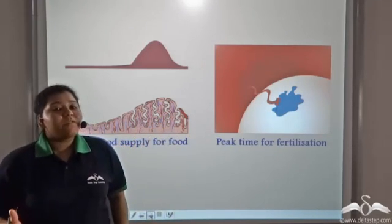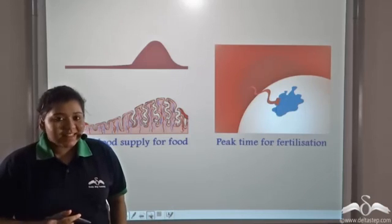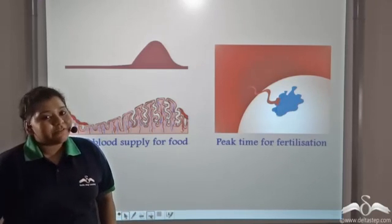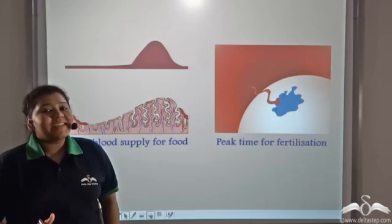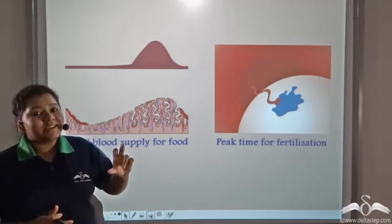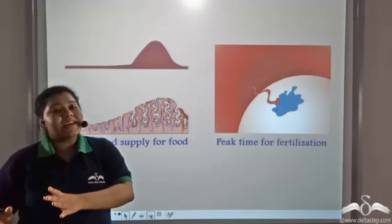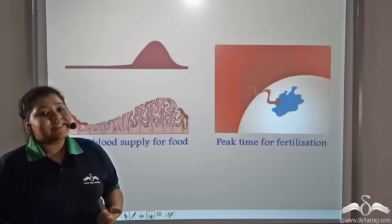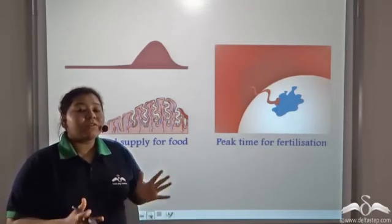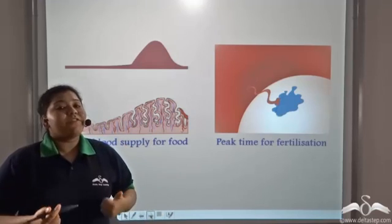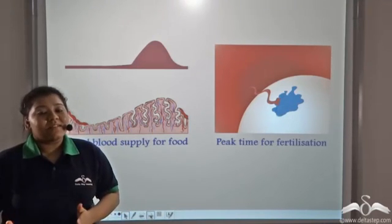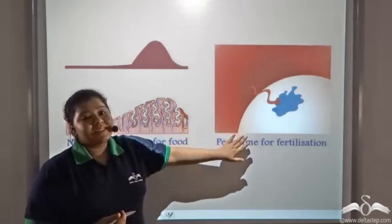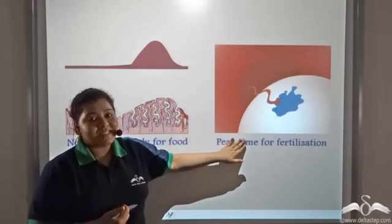What do we require for fertilization? Two things are required. Firstly, the egg needs to rupture out of the Graafian follicle. Secondly, the endometrial layer should be thick so that if the egg gets fertilized, it can come and embed onto it. Both these events happen around the fourteenth day from the beginning of the cycle, so this day is the peak time for fertilization.